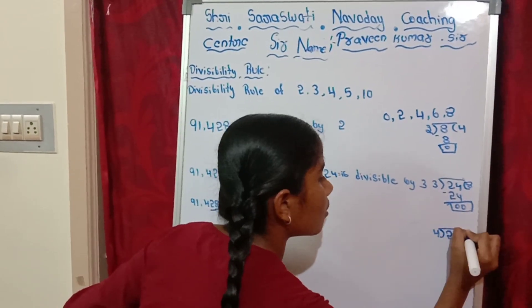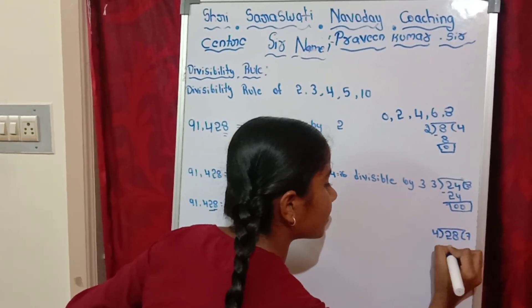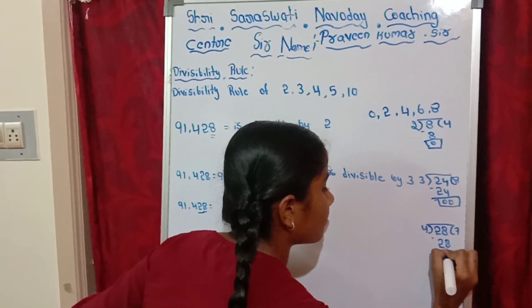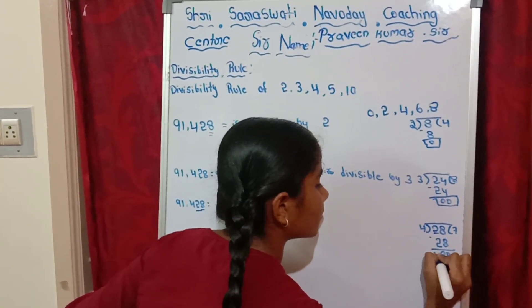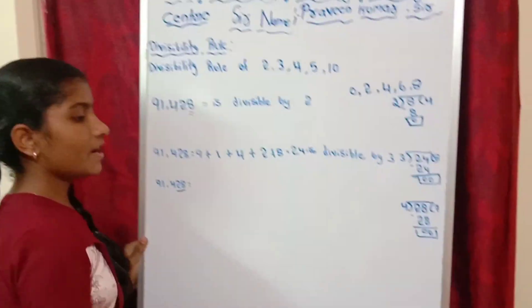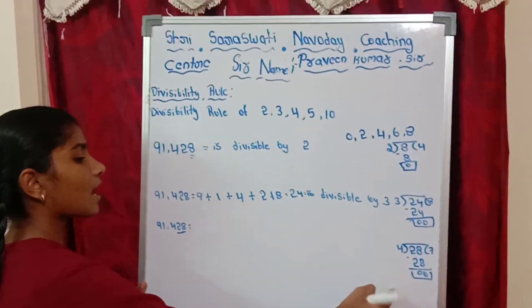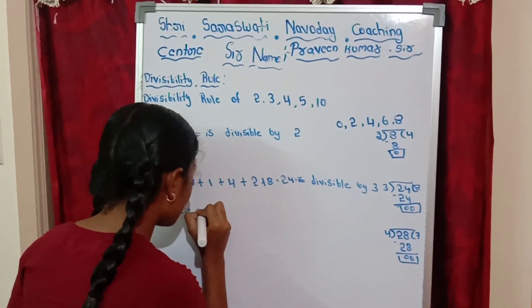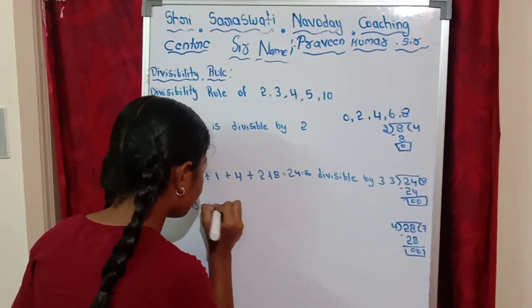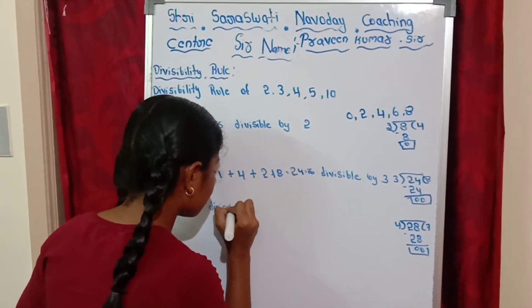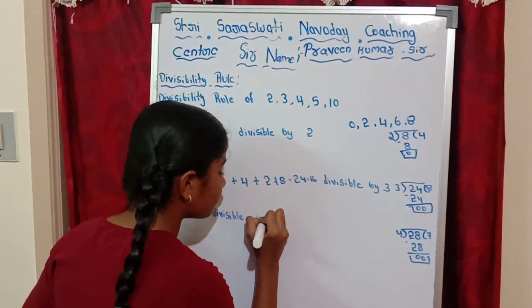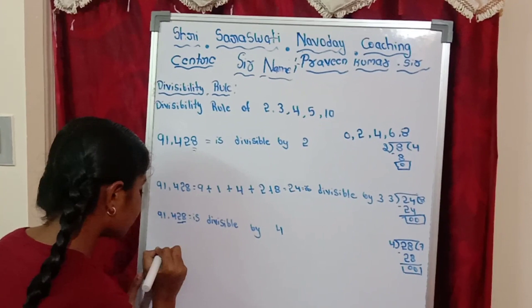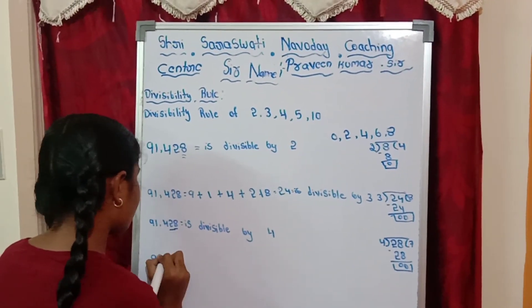For divisibility by 4, we check the last two digits, which are 28. 4 times 7 is 28, 28 minus 28 is 0. So 28 is completely divisible by 4, meaning 91,428 is divisible by 4.